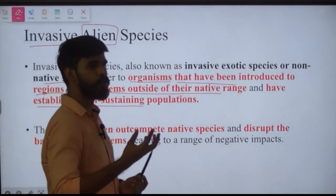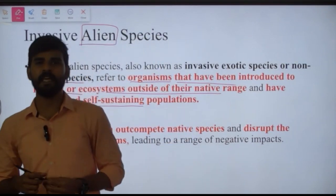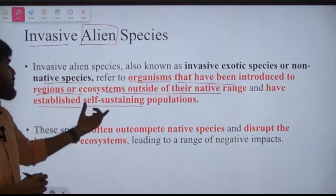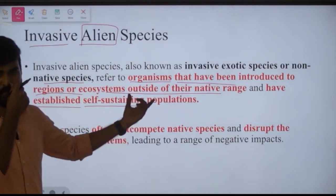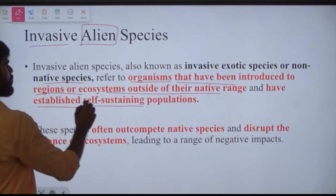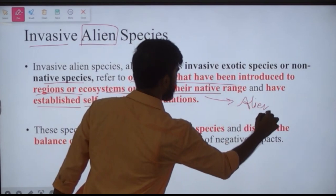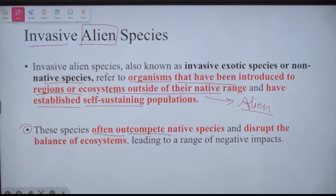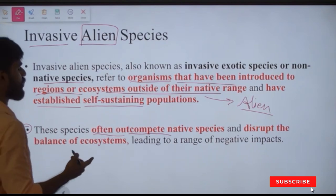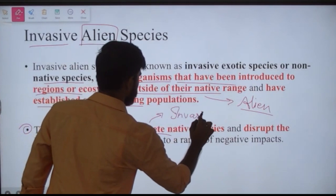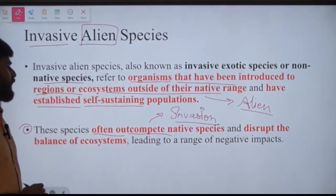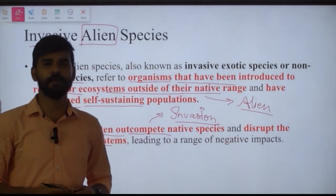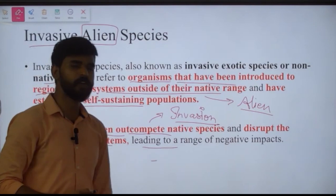Establishing a self-sustaining population is a unique property of invasive alien species. When a new organism is introduced into a newer environment, there are many chances that their population declines. But invasive alien species manage to sustain themselves. They out-compete native species and disrupt the balance of the ecosystem — that is called invasion — and it leads to a range of negative impacts.